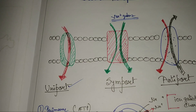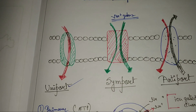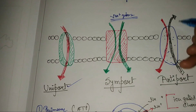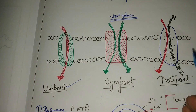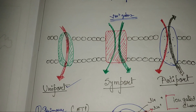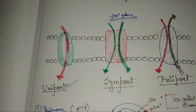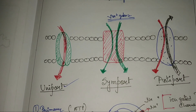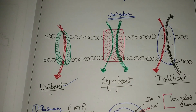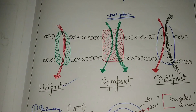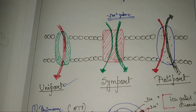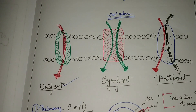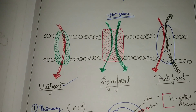In antiport, two molecules move in different directions. If you can see that the black one moves from one side and the red one moves to a different side — when two molecules are moving in opposite directions, one from outside to inside and another from inside to outside, that is known as antiport.